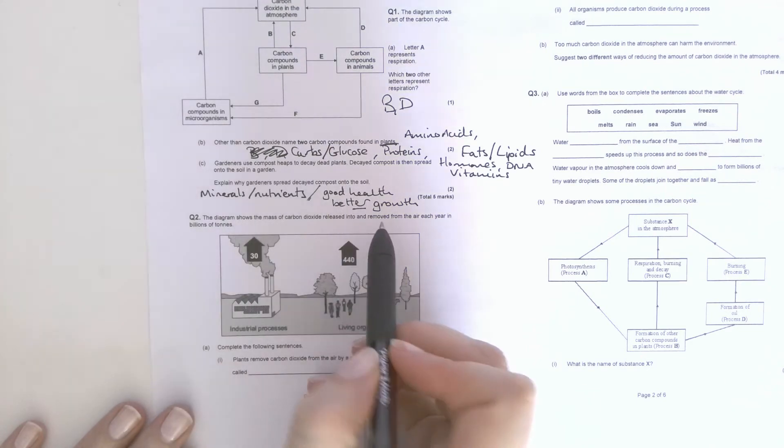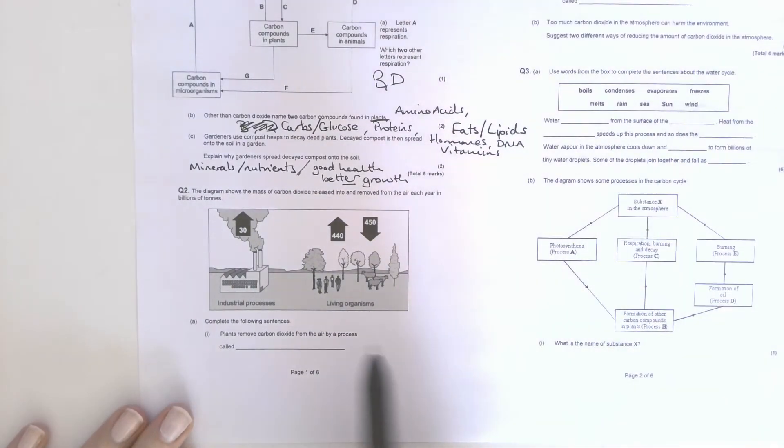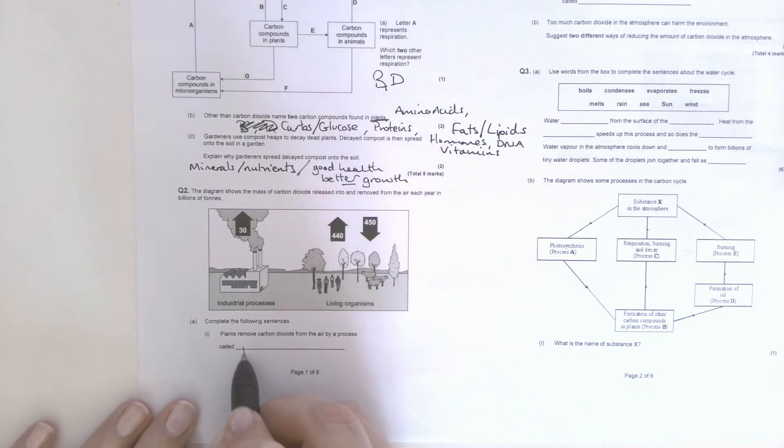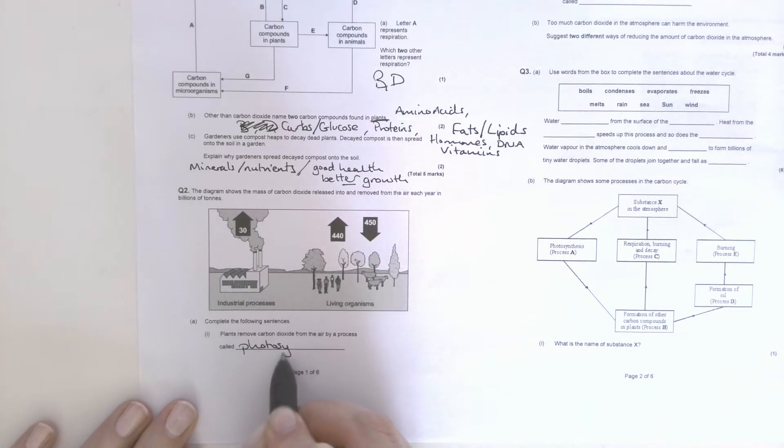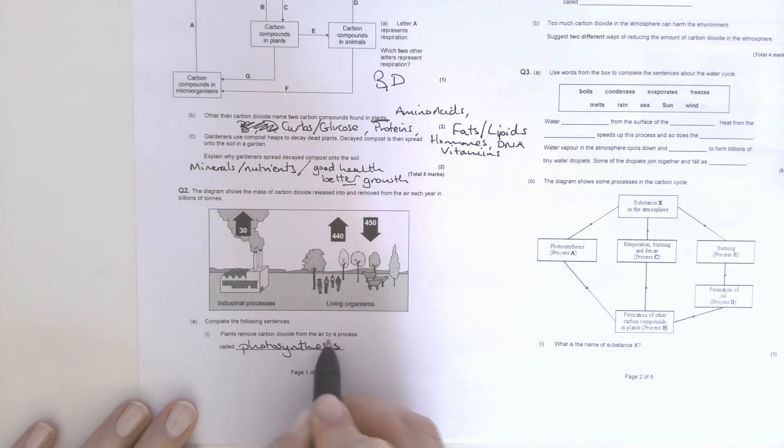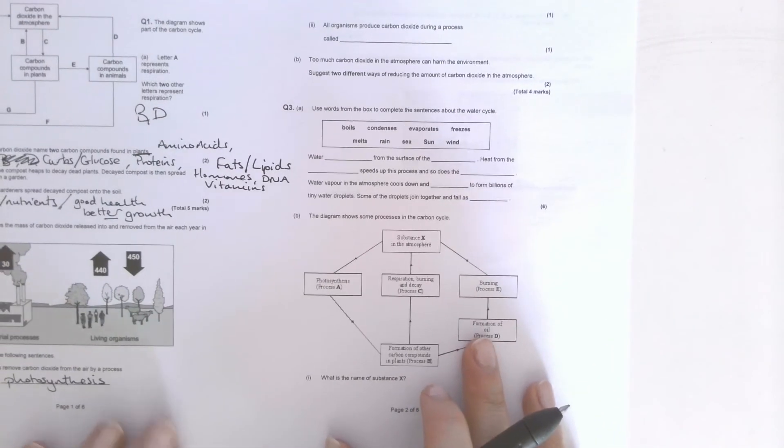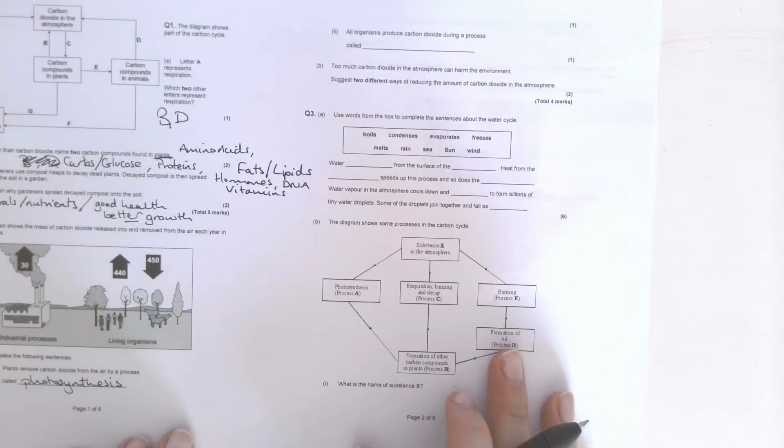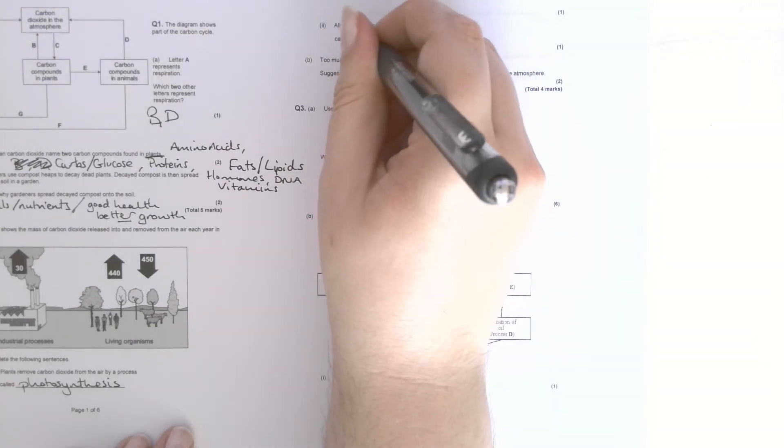Okay, now you have a much simpler diagram of the carbon cycle where we've just got fossil fuels and then respiration, photosynthesis. Plants remove carbon dioxide from the air by a process called photosynthesis. All organisms produce carbon dioxide during a process called respiration.